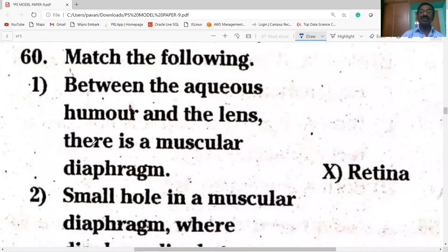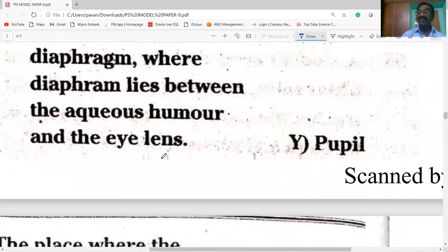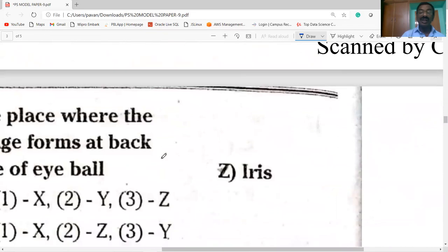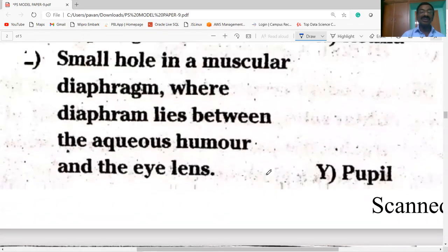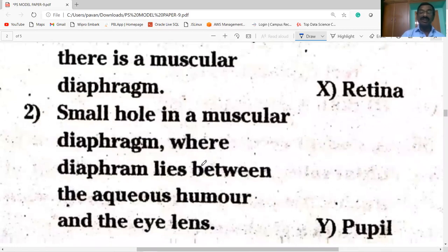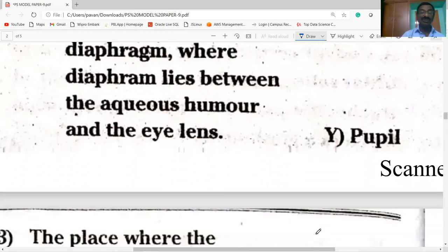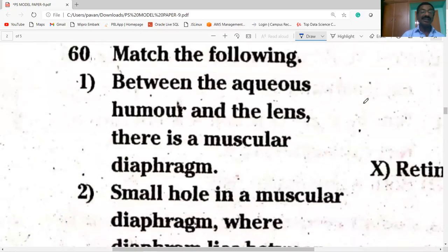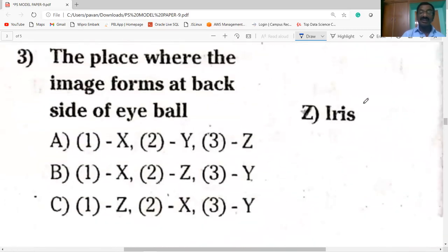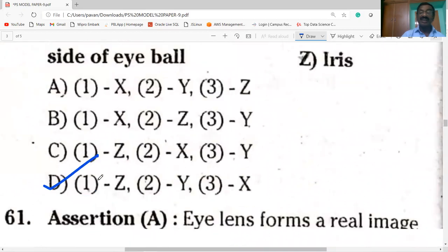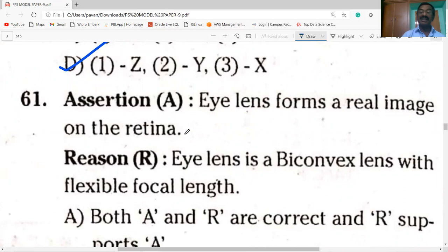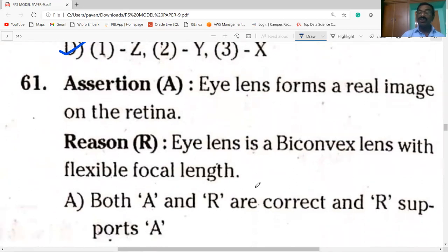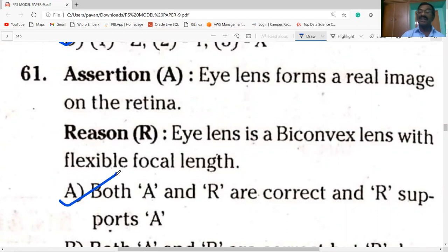Match the following between the aqueous humor and the lens. There is a muscular diaphragm, there is iris. Small hole in muscular diaphragm is pupil. The place where the image forms on the back side of the eyeball is retina. So option D is the correct option. Next question. Eye lens forms a real image on the retina. Eye lens is a biconvex lens with flexible focal length. Both are correct and R is the support.